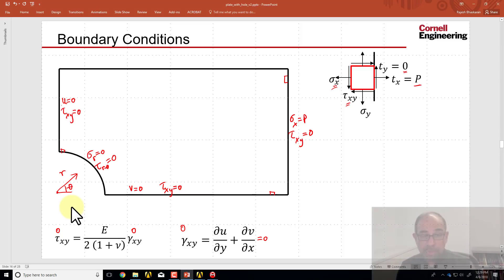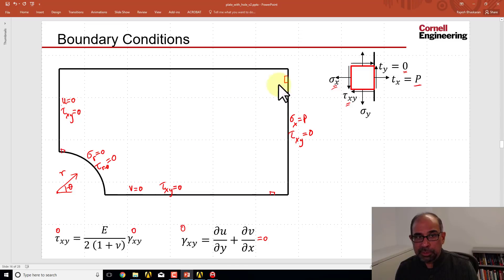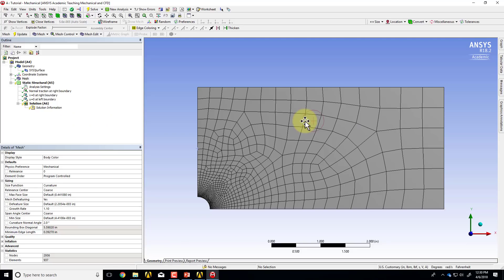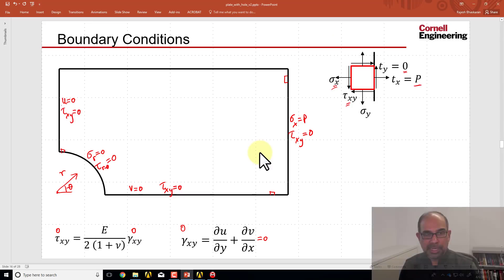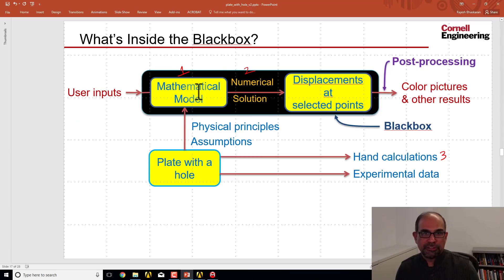Now, the thickness would matter, it doesn't come into the governing equations, but it can come into the boundary conditions if the force at the right edge is given in terms of force rather than force per unit area. In that case, to get the normal traction, you need to take that force and divide it by the area, which is that length times the thickness. But in this case, we're given the force per unit area, so if I change the thickness, it's not going to affect that boundary condition, which is why the thickness doesn't matter over here.